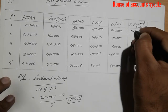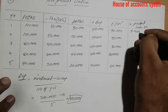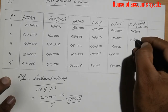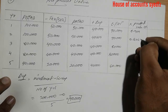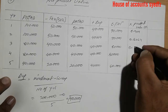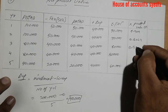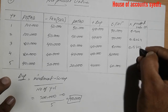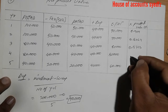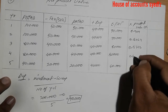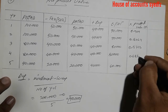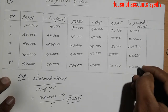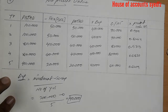Now write the ten percent present value factors: 0.909, 0.8264, 0.7513, 0.6830, 0.6209. Multiply each cash flow by its corresponding present value factor.